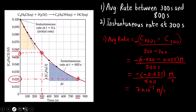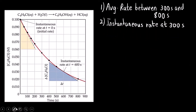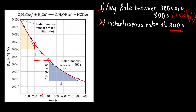Now, how do you calculate the instantaneous rate? We have to find out the slope at t = 300 seconds. So t = 300 second is this point on the graph. Consider any two points on the tangent — suppose I consider this point and this point and find out the slope. This point is (x1, y1) and this point is (x2, y2).